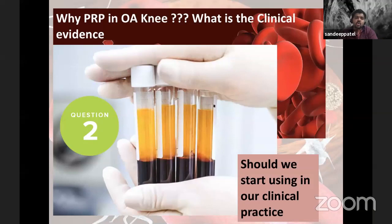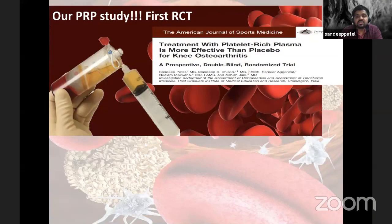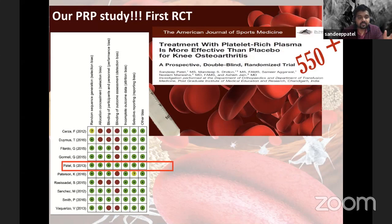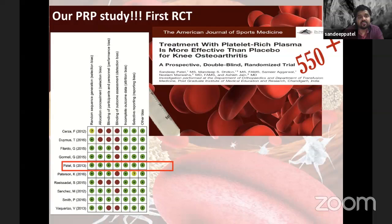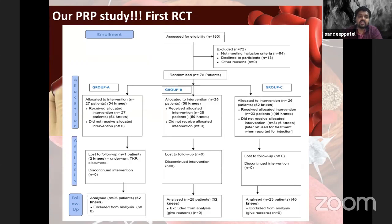Let's go to clinical studies. Should we start using PRP in clinical practice? Our first PRP study was in fact the first randomized controlled trial for PRP in osteoarthritis knee, published in the American Journal of Sports Medicine with 550-plus citations. When we look at the parameters of the study — selection bias, performance bias, blinding bias, attrition bias — it is one of the well-conducted studies. I've taken its quality grading from a good meta-analysis.